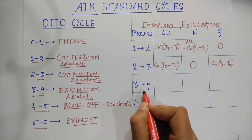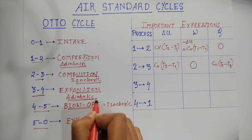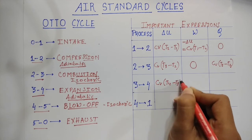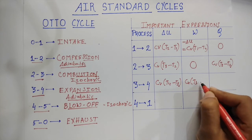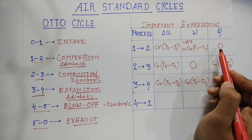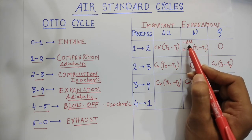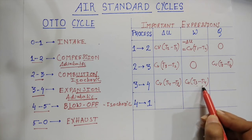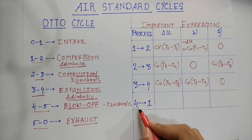The next process is 3 to 4, the expansion process, which is again an adiabatic process. Hence ΔU = cv(T4 - T3), and the work done w = cv(T3 - T4). Since it is adiabatic, no heat addition takes place, so q = 0 and w = -ΔU = cv(T3 - T4).